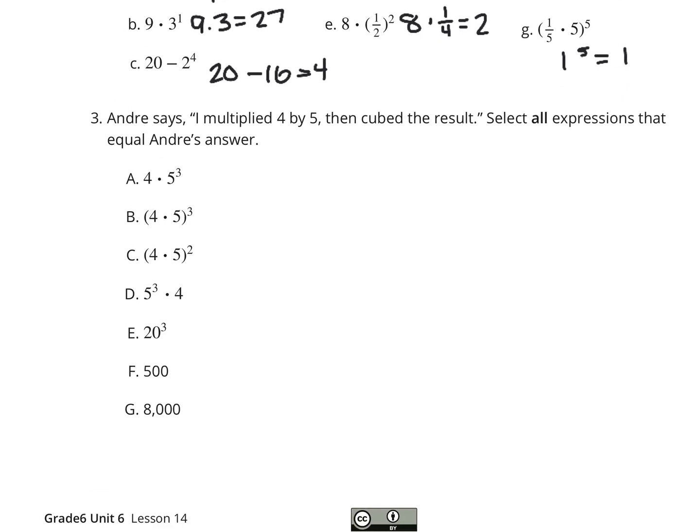And number 3, Andre says, I multiplied 4 by 5, then cubed the result. Cubed is taking a number to the third power, so select all the expressions that equal Andre's answer. I multiplied 4 by 5, then cubed the result. That's not A, but it is B. I multiplied 4 by 5, and then cubed the result. It's not C because cubed is to the third power, not to the second.